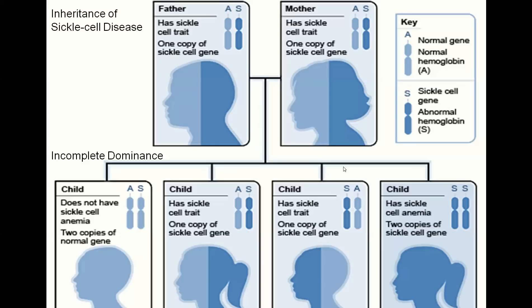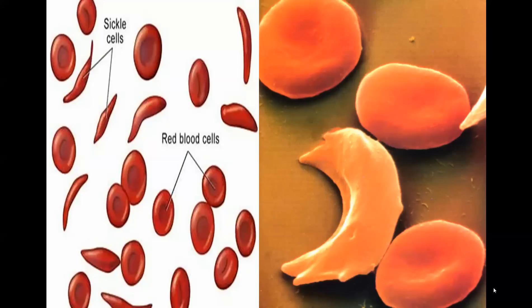Here are the sickle cell inheritance patterns — it's recessive. With both parents as carriers having normal and abnormal hemoglobin, it's the same one to two to one ratio. Note that the homozygous dominant should be labeled A, not S. You've got your two heterozygous children and then your homozygous recessive. You can see what those sickle cells look like compared to a normal blood cell — that crescent shape is what allows them to get stuck on one another.